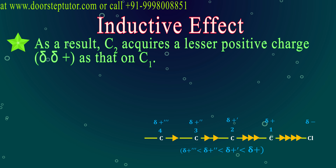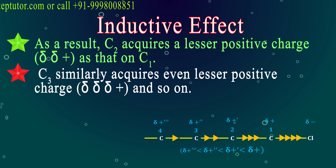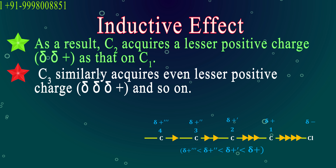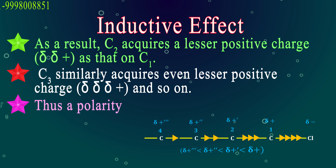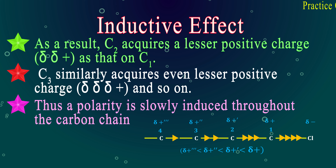C2 has become electron deficient, so it acquires electrons from C3, and C3 will become even lesser positive — having delta delta delta plus charge. You can see that polarity is slowly induced throughout the whole carbon chain. This is called induced electronegative character.